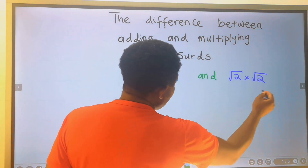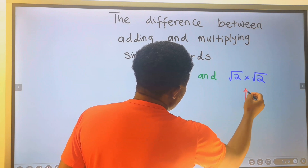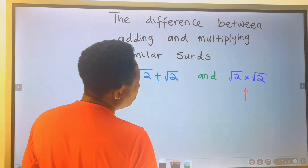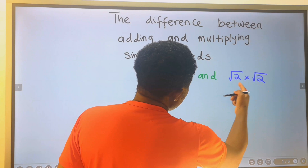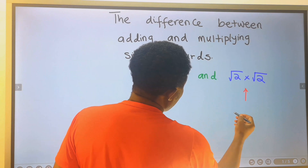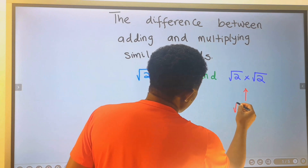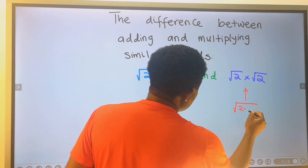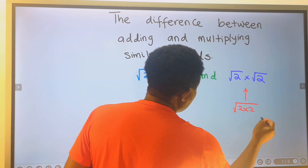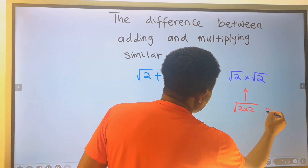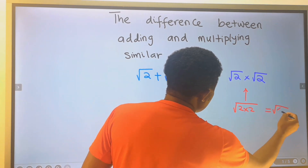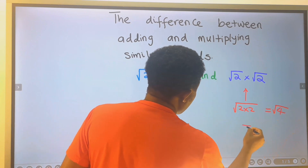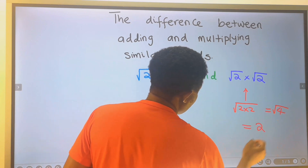According to the law of surds, when both are multiplying, we are going to have 2 times 2 inside the square root, which gives us the square root of 4, and our answer is 2.